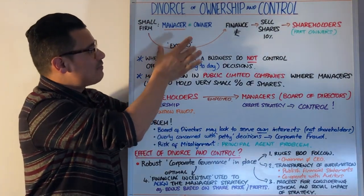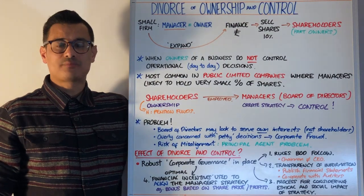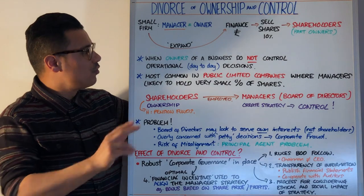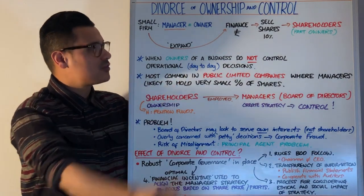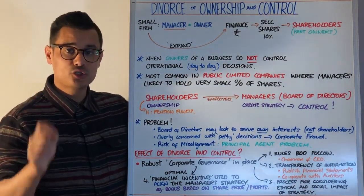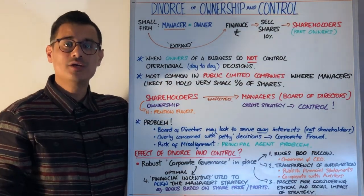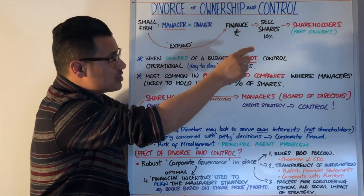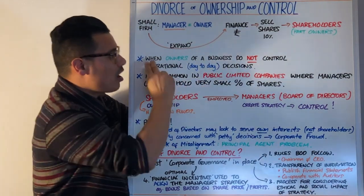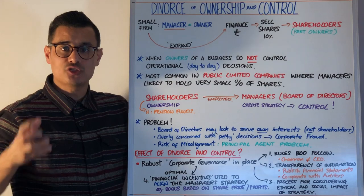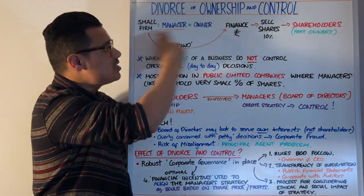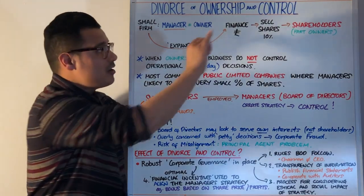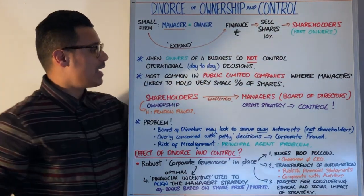That allows the manager to have the finances to do the expansion — new outlets, research and development, and so forth. The divorce of ownership and control occurs when the owners of a business do not control the day-to-day operational decisions. These new shareholders are owners, but they may not control the operational decisions; it could be the manager who still makes those day-to-day decisions. Herein lies the divorce of ownership and control.